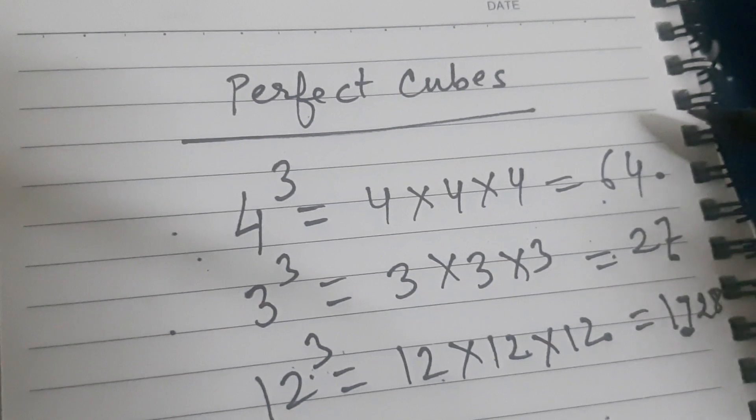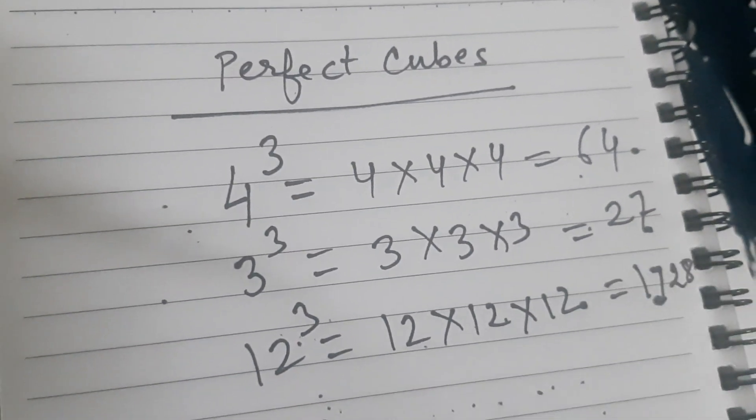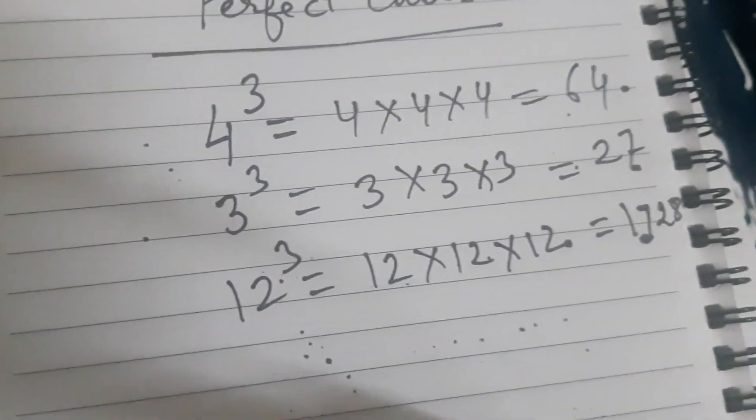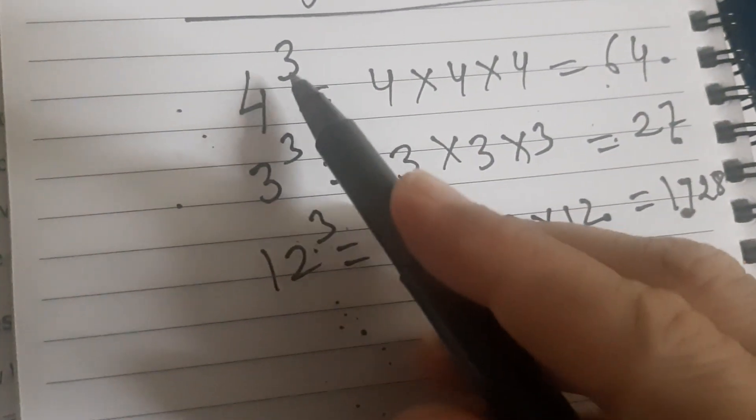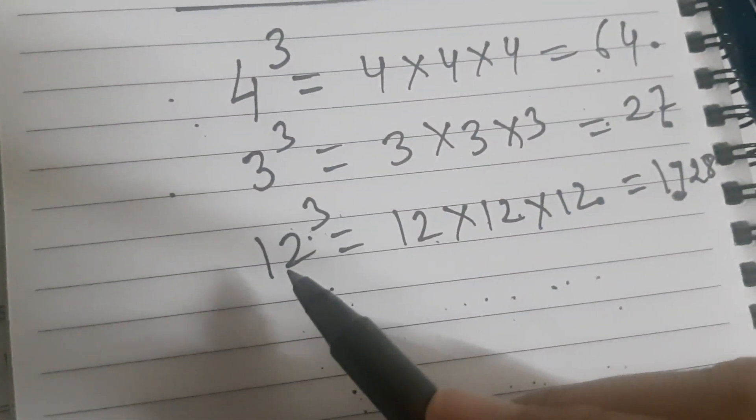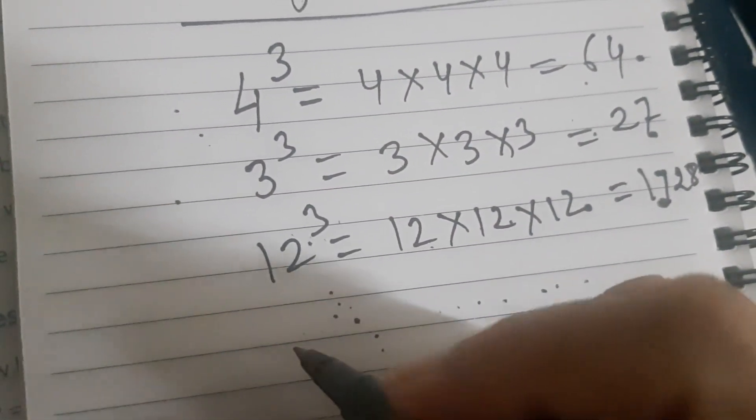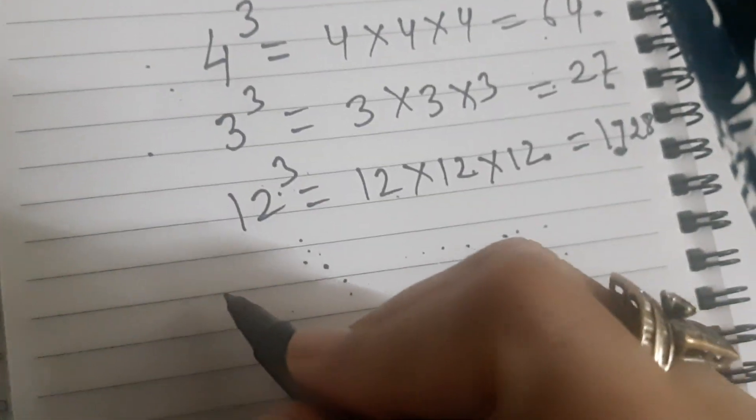These numbers are cubes of positive integers or natural numbers. Such numbers are called perfect cubes.